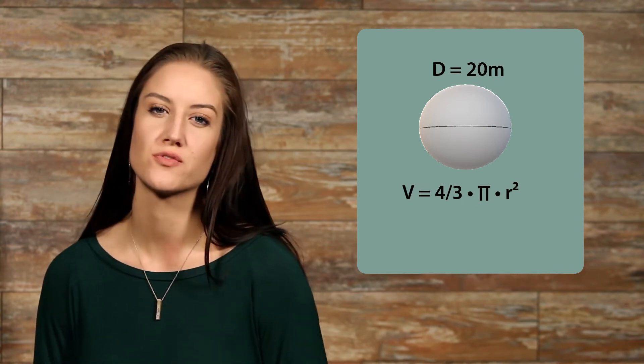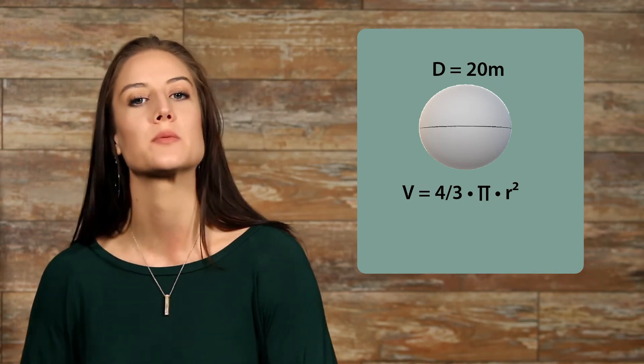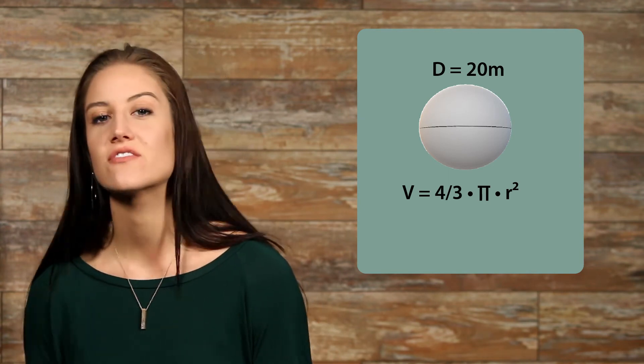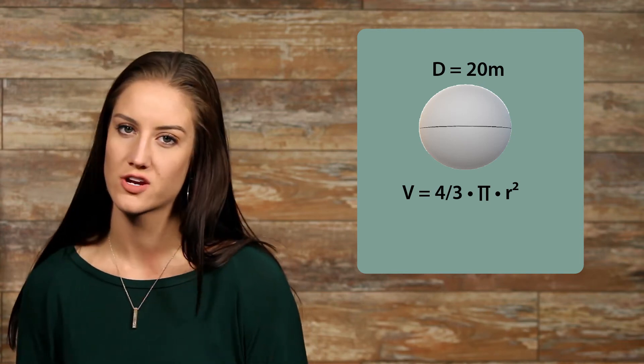Now, you can do what is called a proof to prove that this is a formula, but for now we'll just go ahead and plug the numbers into the given formula. The sphere has a diameter of 20 meters.